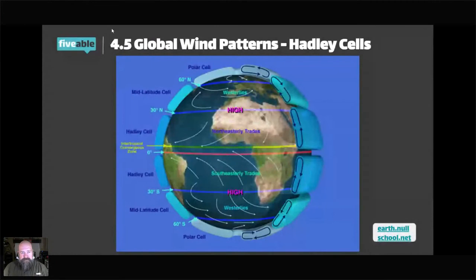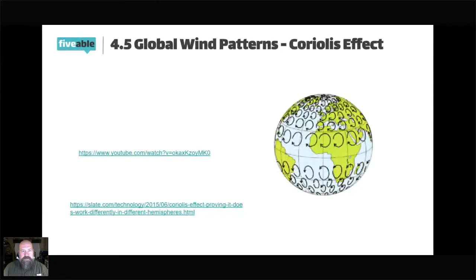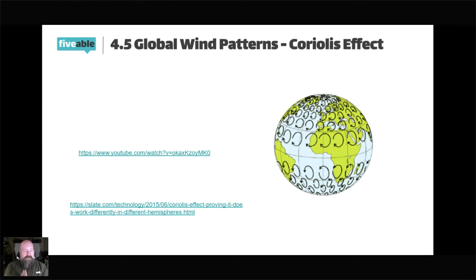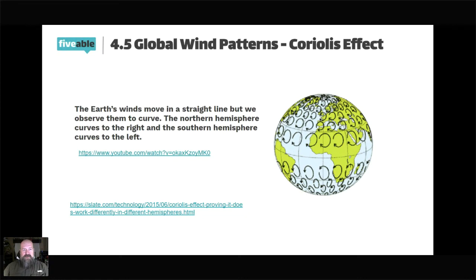Look at these curvy lines on the wind map. I was afraid I wouldn't have enough time to discuss the Coriolis effect effectively, so I put two links in the slides. The first is from an actual physicist who uses drones to show it from different perspectives. The Coriolis effect is this: Earth's winds are technically forming a straight line, but because the Earth is rotating, it curves. So the winds are trying to go in a straight line but because of the rotation of the Earth, they actually curve.